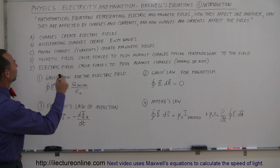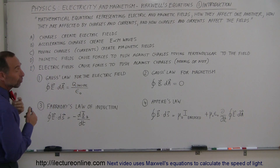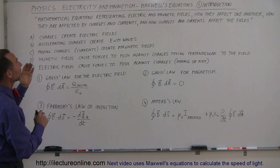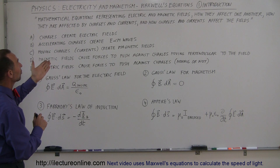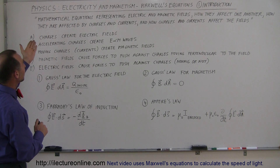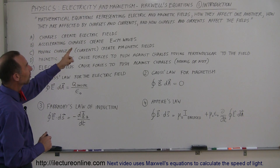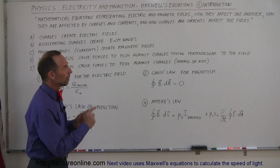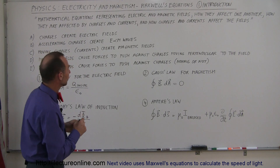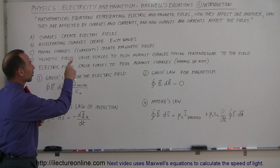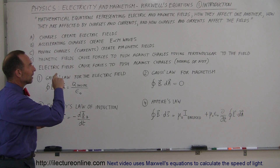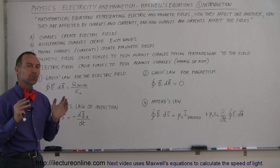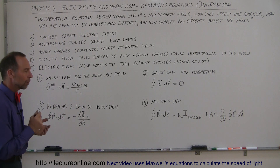Let's read the definition together and see if we can make sense out of it. What are Maxwell's equations? They're a set of mathematical equations that represent electric and magnetic fields, how they affect one another, how they're affected by charges and currents, and how charges and currents are affected by the fields. That's really what Maxwell's equations are.